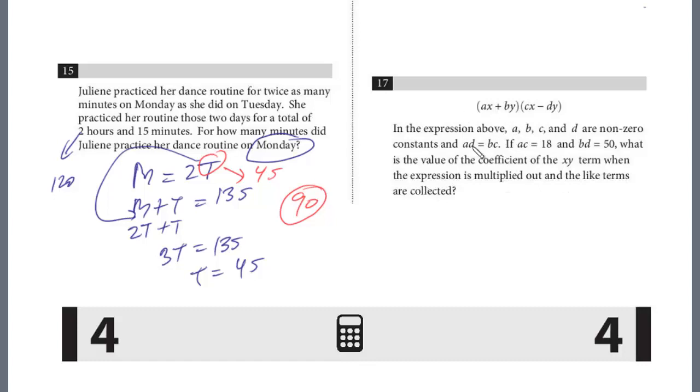And so before I substitute these different values, I'm just going to multiply that because that's what the question is asking for. I'm just going to FOIL this out. And so the first term I get ACX squared, all right, and then I get minus ADXY. And I'm doing the middle terms. So I get BCXY outer minus BDY squared.